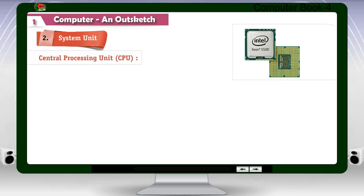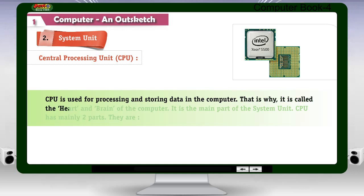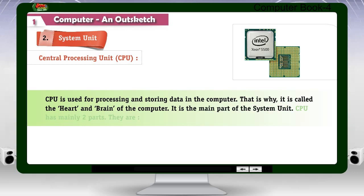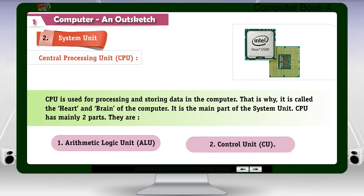Central Processing Unit (CPU): The CPU is used for processing and storing data in the computer. That is why it is called the heart and brain of the computer. It is the main part of the system unit. The CPU has mainly two parts: 1. Arithmetic Logic Unit (ALU), 2. Control Unit (CU).